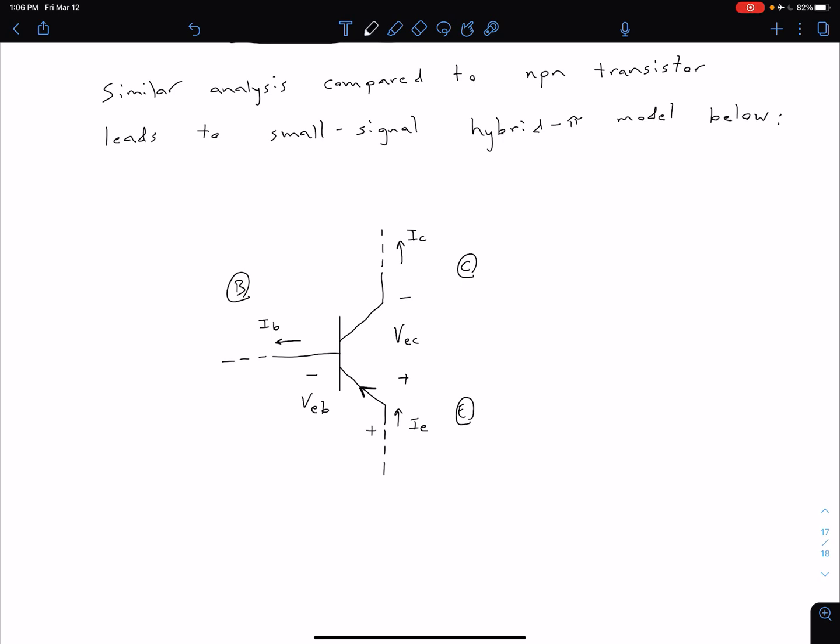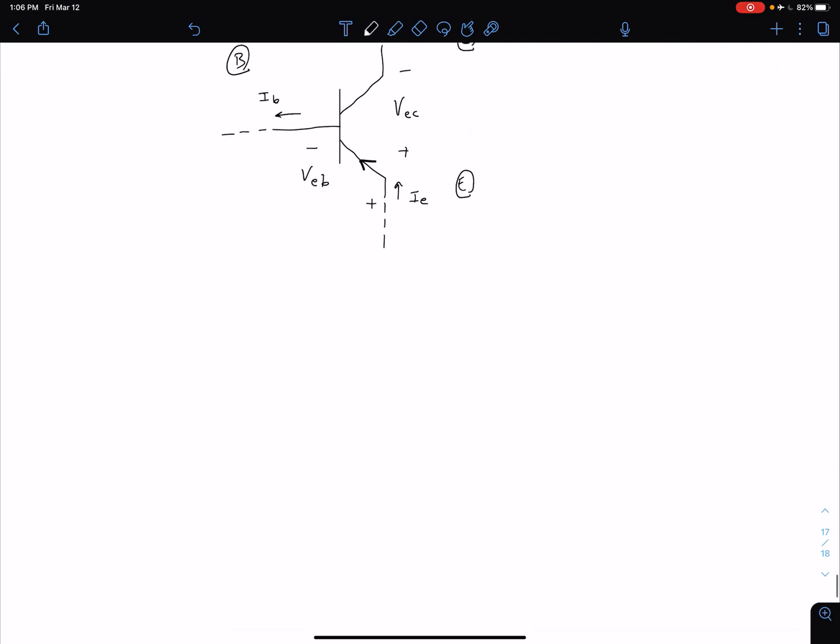So if we take that same idea to our small signal hybrid pi model, all we have to do is sort of switch a couple of things around. Let's start by drawing out our three terminals as we normally do. I'm going to put my collector a little further to the right so that we can include our r0 for our early effect as well.